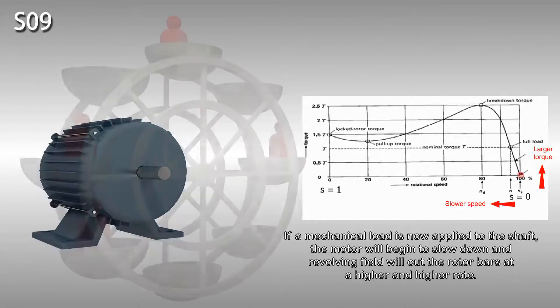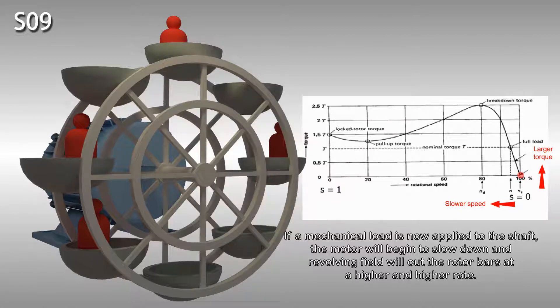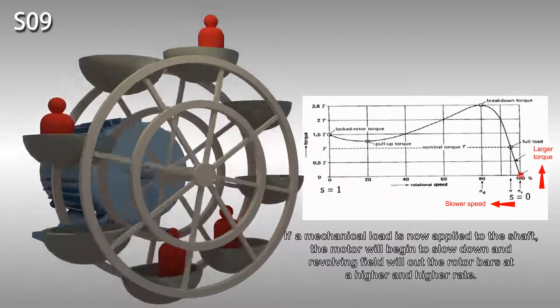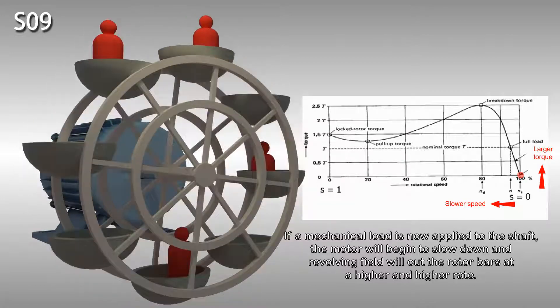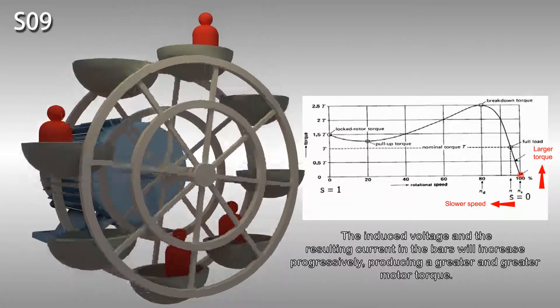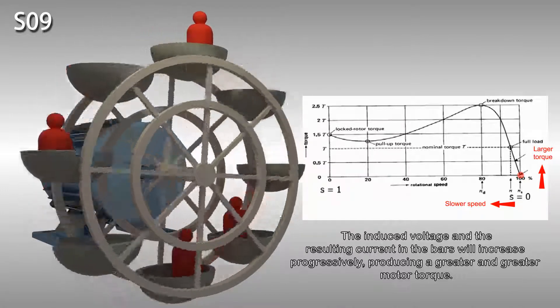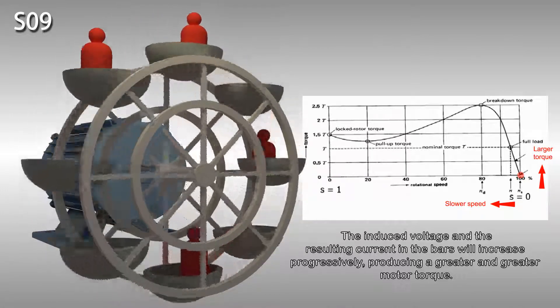If a mechanical load is now applied to the shaft, the motor will begin to slow down and the revolving field will cut the rotor bars at a higher and higher rate. The induced voltage and the resulting current in the rotor bars will increase progressively, producing a greater and greater motor torque.